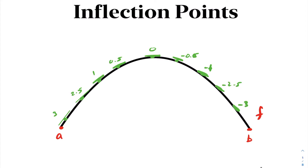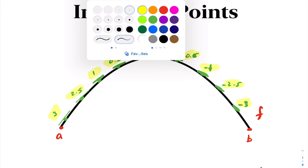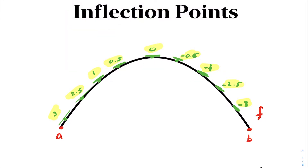As you move along the curve you'll notice that your slopes are decreasing throughout. When your slopes are decreasing throughout, that means the second derivative would therefore be negative. When your second derivative is negative, the function is said to be concave downwards.